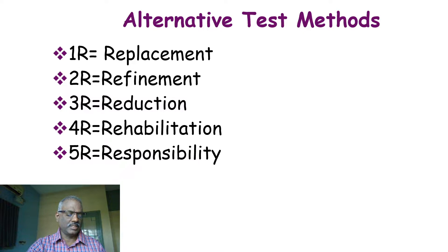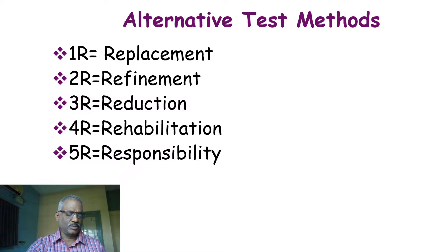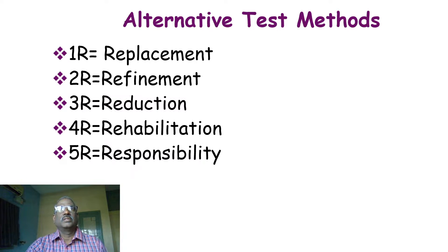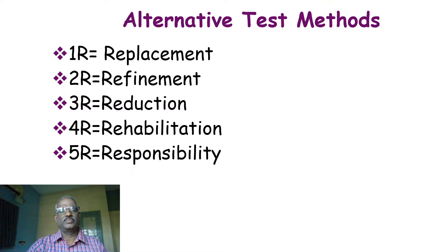We can also use human volunteers for some experiments — for example, pain threshold tests which explore pharmacogenetics, evaluation of analgesic activities in human volunteers, or the effect of coffee on psychomotor performance using the six-letter cancellation test or digit-letter substitution test. We can also use early developmental stages before they become protected — for example, chicken embryos.